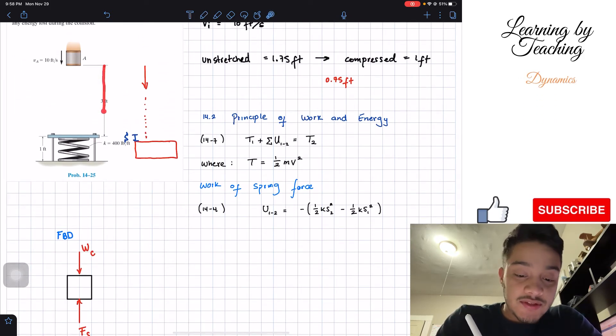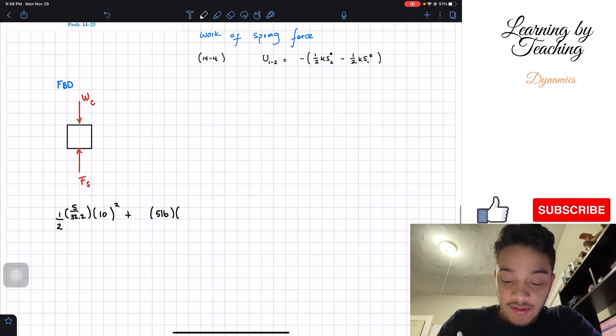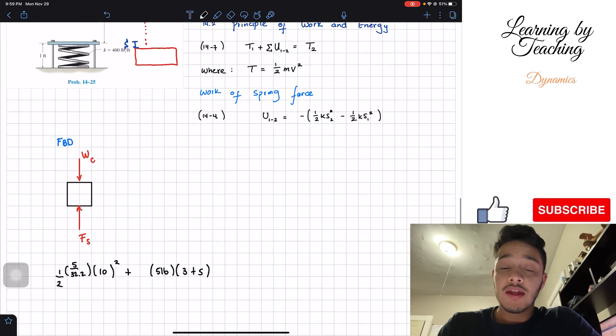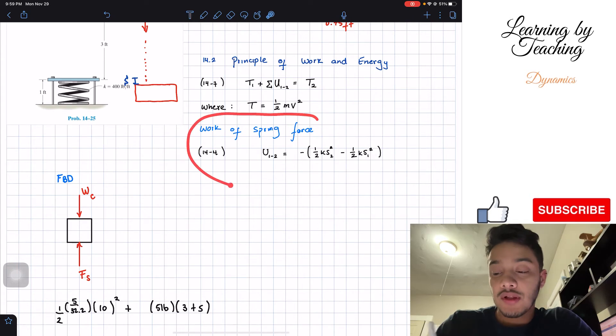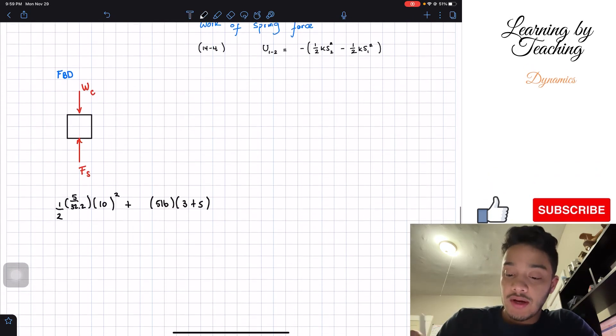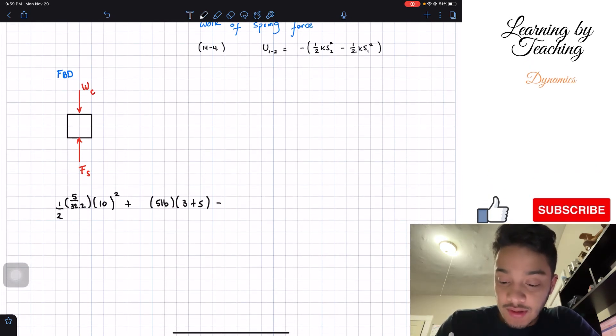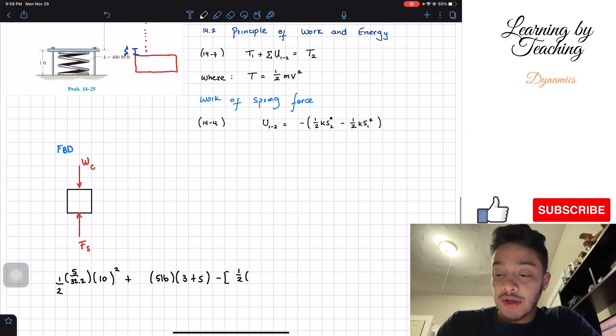The distance is going to be this 3 feet plus the addition of this S, so we're going to have 3 feet plus the addition of my S. Then the second force that we have is this spring force. For that spring force we're going to utilize this equation, therefore we're going to have minus, then let's open a bracket, one half the spring constant K which is 400.